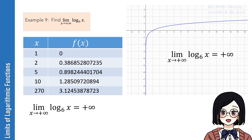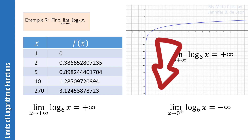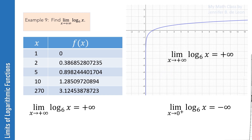Notice that the limit of the logarithm of x to the base 6 as x approaches 0 from the right is negative infinity, since the value of the function decreases without bound as x approaches 0 from the right.